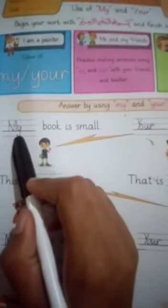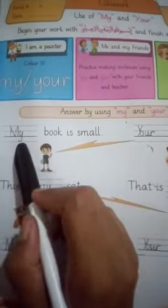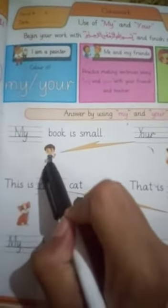When you write, you learn. 'My' meaning: my book is small. My kite is small. Your kite is big.